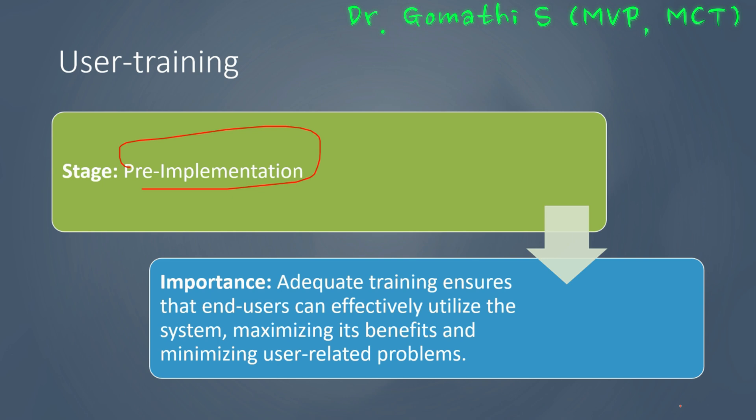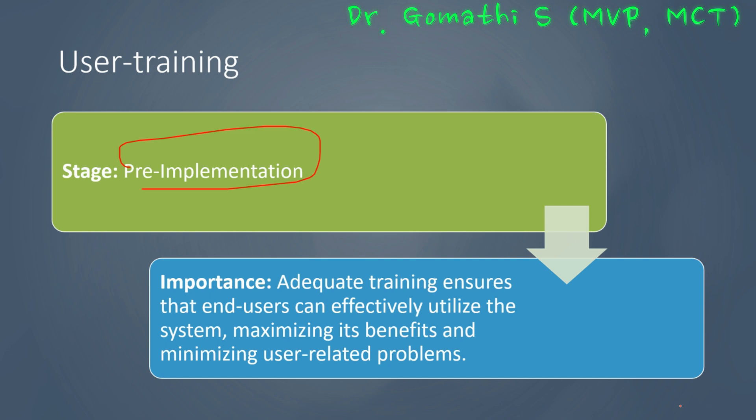The fourth stage is user training, also a pre-implementation stage. A system is only as effective as the users who interact with it. Proper training ensures that users can leverage the system's capabilities to the fullest extent, enhancing productivity and minimizing user-related challenges. We design training programs tailored to each user's role and responsibilities, covering everything from basic operations to advanced functionalities. This investment in user training pays dividends by empowering individuals to harness the system's power efficiently.